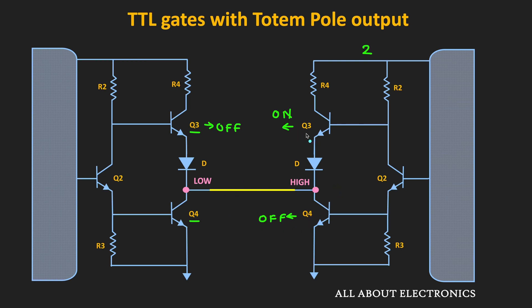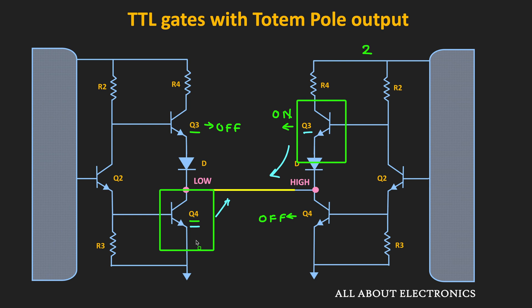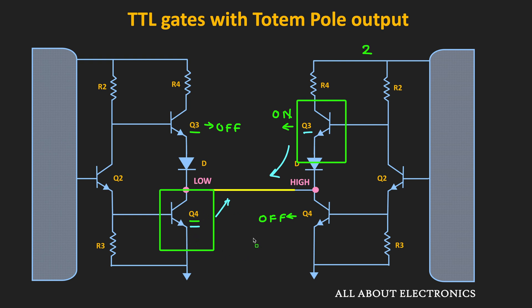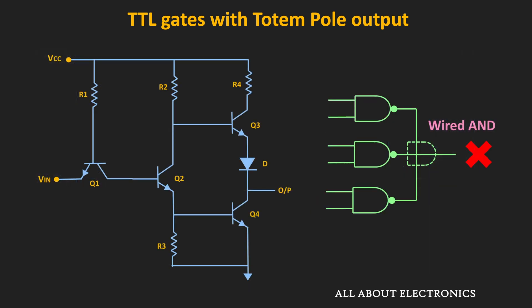When we connect these outputs together, Q3 will try to pull up the output voltage while Q4 will try to pull it down to logic low. Since both are active elements, both transistors will fight to set the output voltage. Since Q4 offers a lower resistance path, we effectively have a short circuit, causing high current flow between Q3 and Q4, and both logic gates can get damaged. To avoid that, totem pole outputs are not connected together, making wired-AND logic impossible with totem pole TTL gates.